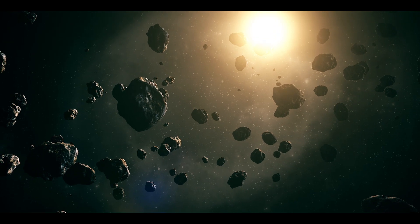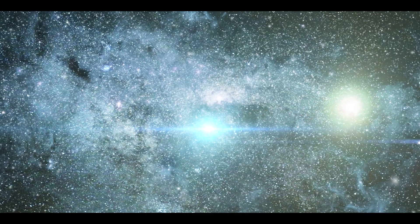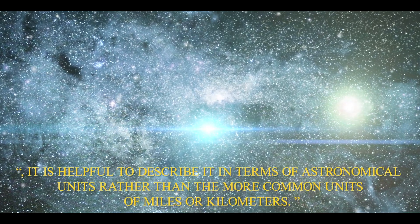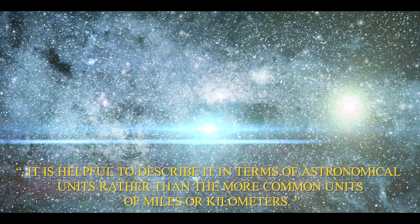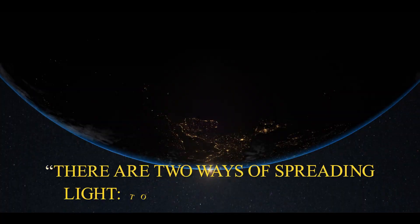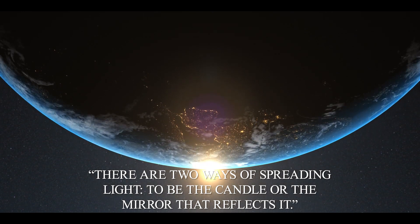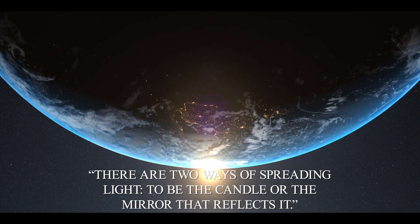In order to fully understand the distance between the sun and the Oort Cloud, it is helpful to describe it in terms of astronomical units rather than the more common units of miles or kilometers. The distance between the earth and the sun is one astronomical unit, AU.